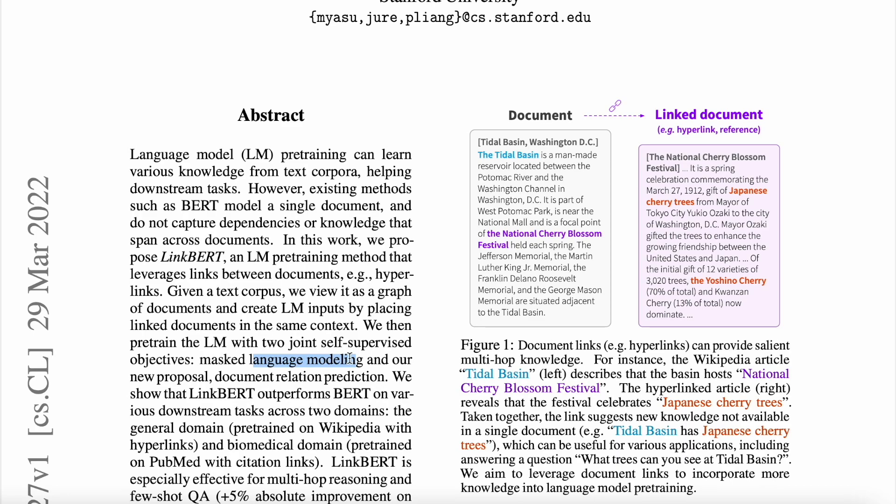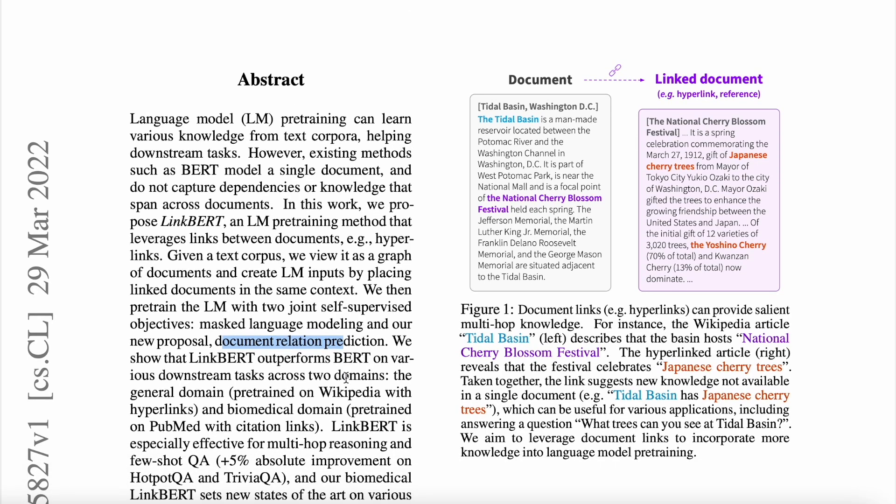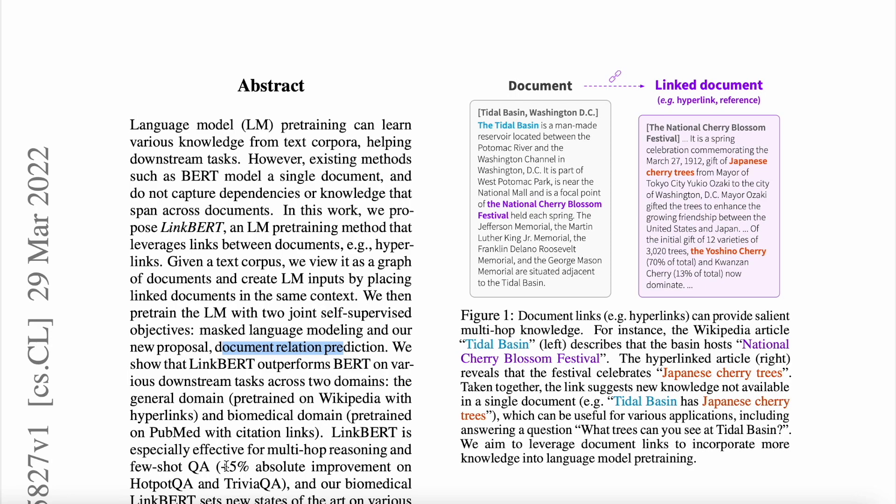Here again, they pre-train the language model with two objectives: masked language modeling, the same one that we had for the original BERT, and the second is Document Relation Prediction (DRP). This is again more or less a classification objective that original BERT had, but with a different intent.